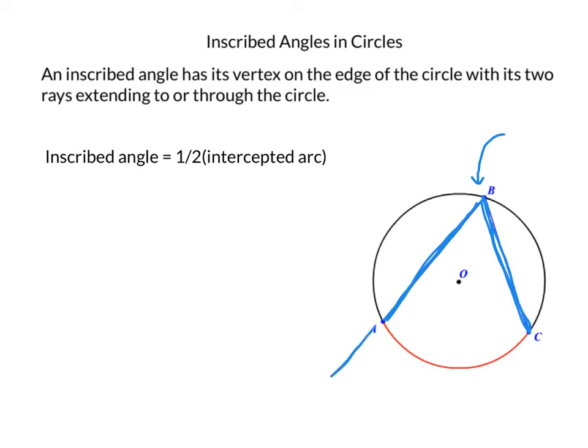They have to start at that vertex and extend to or through the circle. So sometimes these will come out and cover like that. It would still be an inscribed circle. I'm just going to erase those because I blocked the letters. Okay, there we go. Much better.